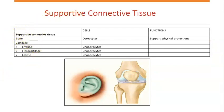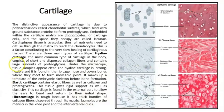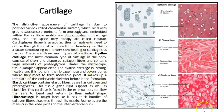Now we get to cartilage. Cartilage is a tissue, and like any other tissue, it's going to have cells. The cells in cartilage are called chondroblasts. Eventually the chondroblast turns into a chondrocyte. There are three kinds of cartilage: hyaline, elastic, and fibrocartilage.